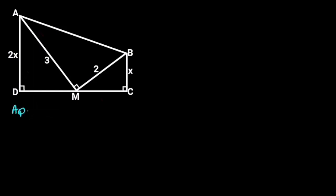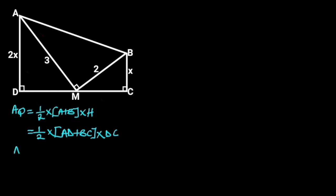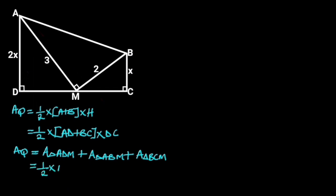Area of trapezoid is equal to 1/2 times (A plus B) times H, which is the same as 1/2 times (AD plus BC) times DC. Or, area of trapezoid is equal to area of triangle ADM plus area of triangle ABM plus area of triangle BCM, which equals 1/2 times DM times AD, plus 1/2 times BM times AM, plus 1/2 times MC times BC.